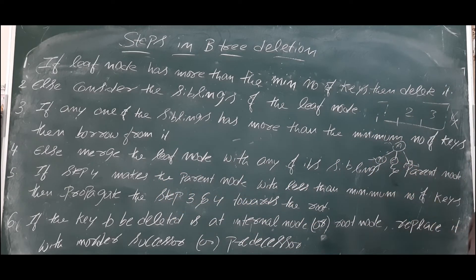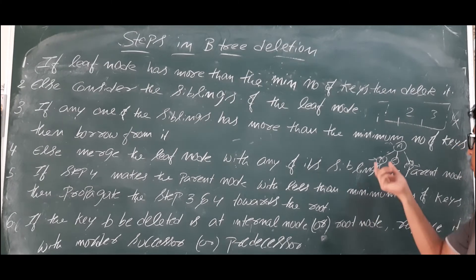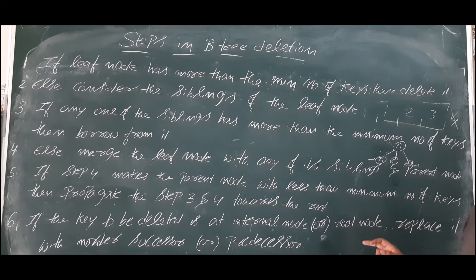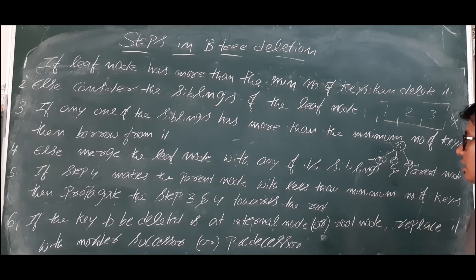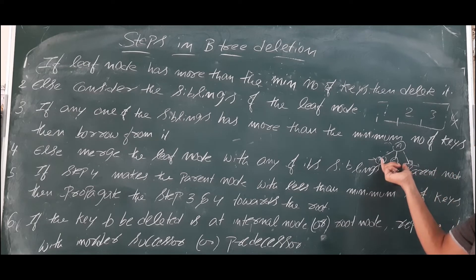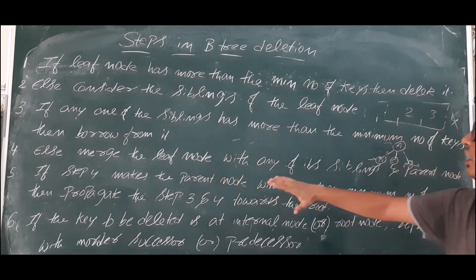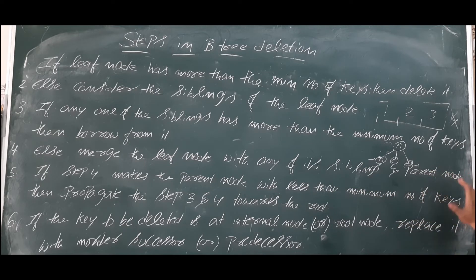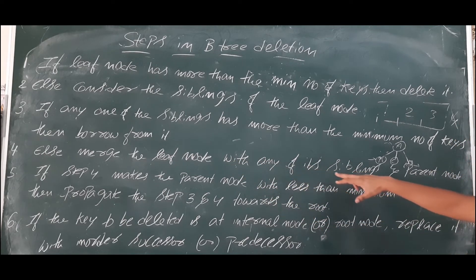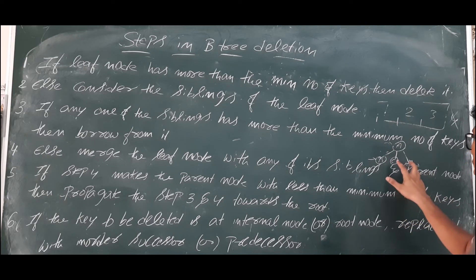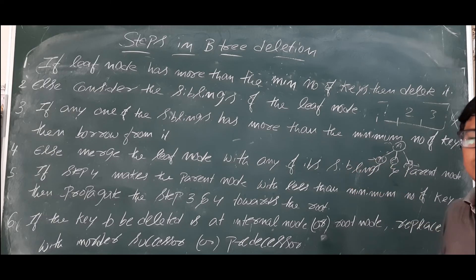If both siblings B and D do not have more than the minimum number of keys, borrowing is not possible. First it checks whether C can borrow from B; if not, it tries to borrow from D. If neither is possible, then merge the leaf node with any of its siblings and the parent node — merge B and C with the parent, or C and D with the parent.